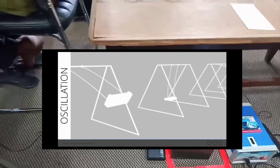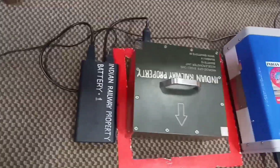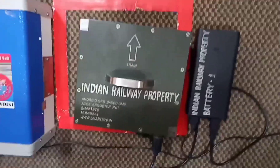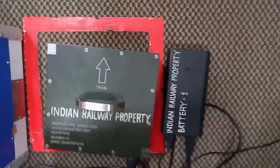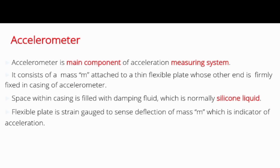The OMS equipment should be kept on the coach floor almost close to the bogie pivot. The red mark shows the bogie pivot position. Battery supply is given to the OMS equipment. The OMS equipment consists of an oscillometer and transducer. Other components are mass M, a flexible plate, and silicon fluid.